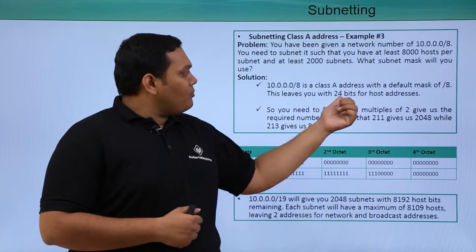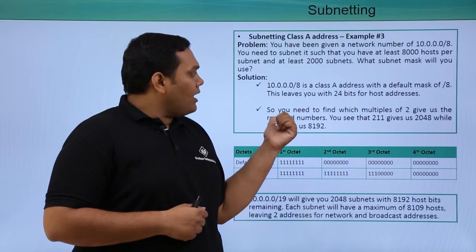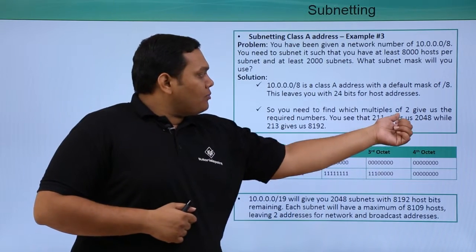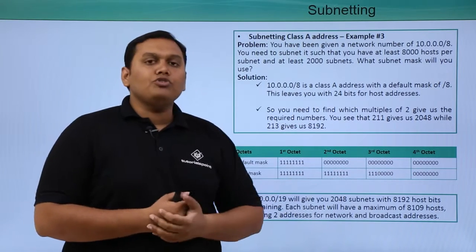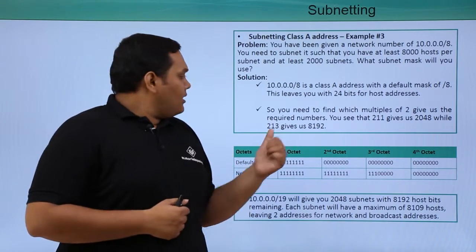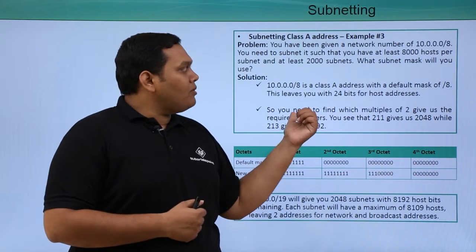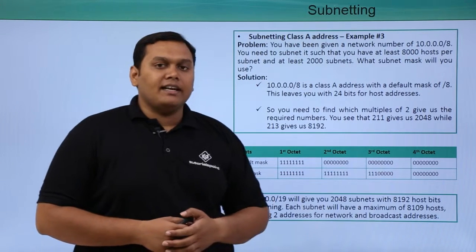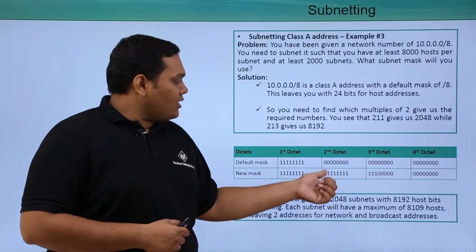/8 is a Class A address with a default mask of /8. This leaves 24 bits of host addresses. After that you have to borrow. Multiples of 2 give us the required numbers. 2^11 gives you 2048 while 2^13 gives you 8192. We need a minimum of 8192.